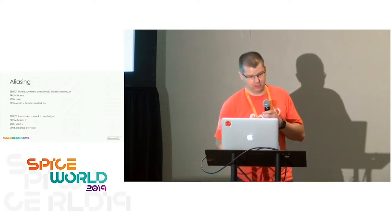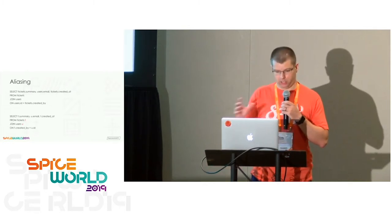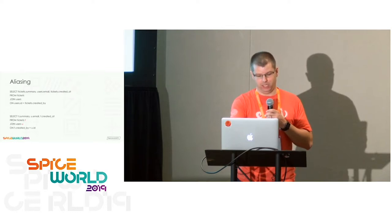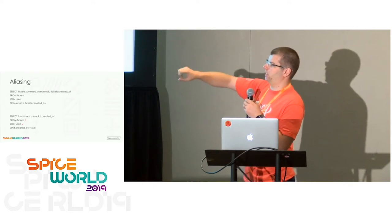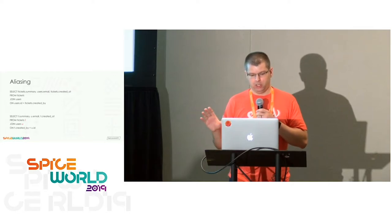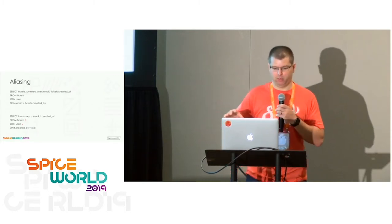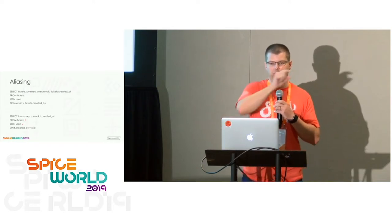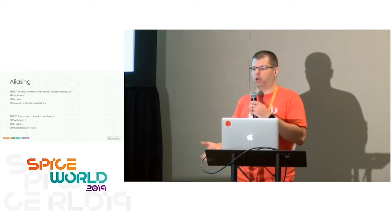You might want to alias that, because writing 'tickets.summary, users.email, tickets.creator' gets verbose. Using aliases: FROM tickets T — now everywhere you would have had to write 'tickets' you can just write T. So it's T.summary, U.email. I'd recommend standardizing this for yourself because when you start reusing old bits of SQL later on, if tickets is always T and users is always U, you can copy and paste bits out of your SQL to build another more complex query and know it's going to work.